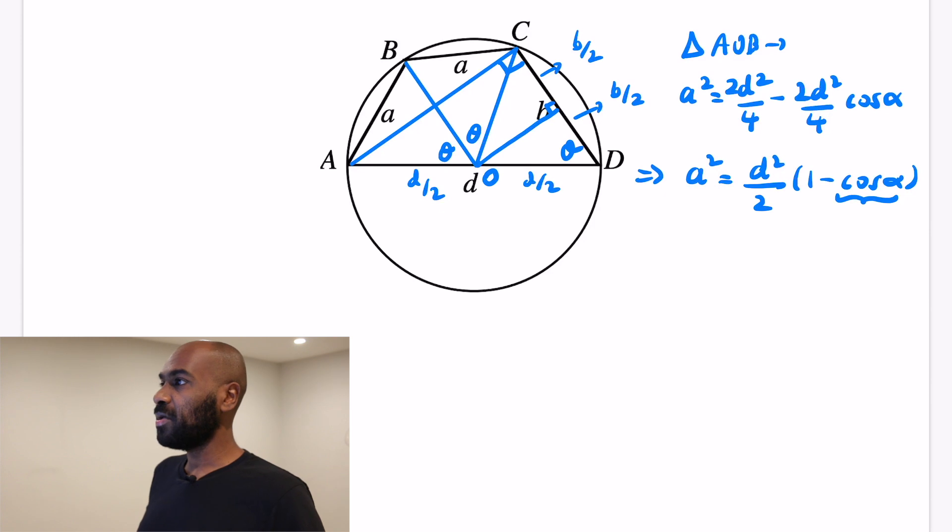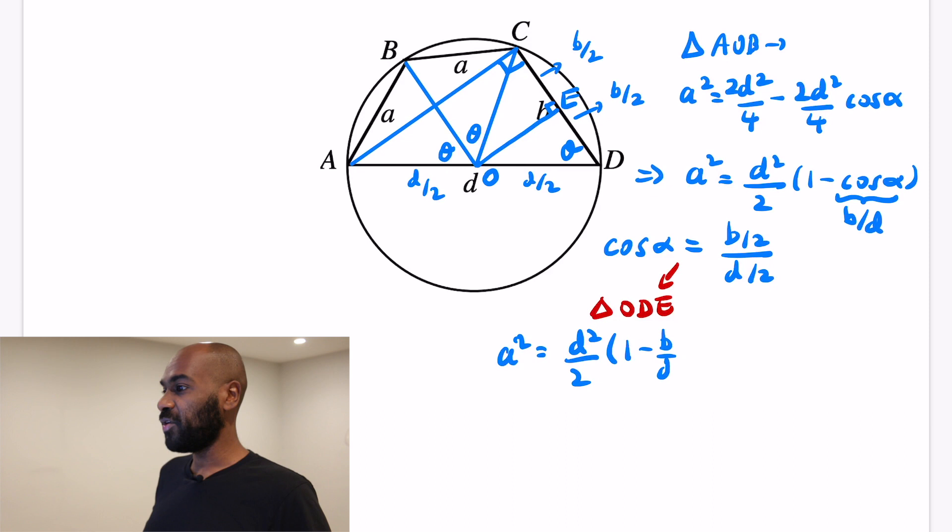But what is this cosine of this angle? Well, now we have this smaller triangle that we can use, that we drop the perpendicular from, that goes from O to D to where the perpendicular on CD is. And we get that the cosine of this angle is b over 2 divided by d over 2. Again, that comes from triangle ODE, we've drawn in that perpendicular onto CD, called it E right over there. So now if we plug that into our previous sine law formula, we actually get a nice expression involving A, B, and D. We get that A squared is d over 2 squared times 1 minus b over d. And that gives us more directly, by multiplying by 2d all across, that 2a squared is d times d minus b.